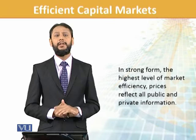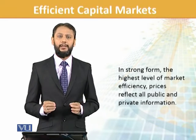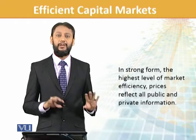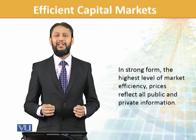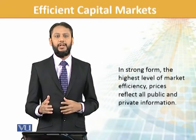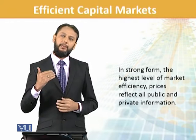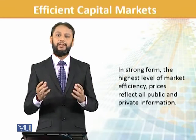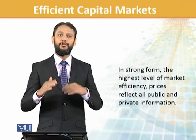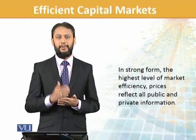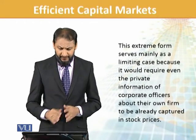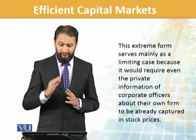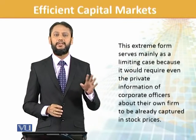The third and highest degree of efficiency is the strong form. In a strong market, all public as well as private information — even information internal to the company — is reflected in the stock price. We say the market has strong efficiency when even future projects or news not yet publicly announced by a company is reflected in the stock price. This is the highest degree of efficiency. In practice, a perfectly strong form market probably doesn't exist anywhere in the world. In strong form, all information — public as well as private — is reflected in the stock price, which is perfectly at its intrinsic and fair value.